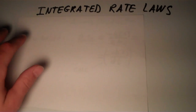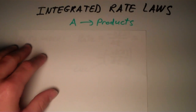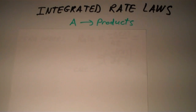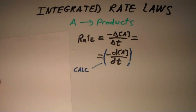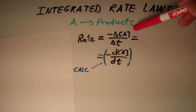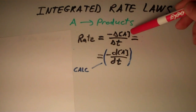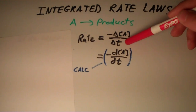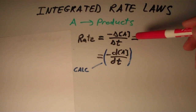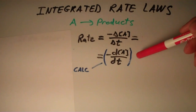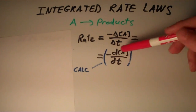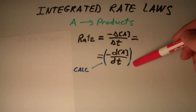For simplicity, let's return to our example where we have one reactant A decomposing into its products. We know from the rate equation that the rate is equal to the negative of the change in concentration of A over the change in time, or more precisely, negative d[A]/dt.